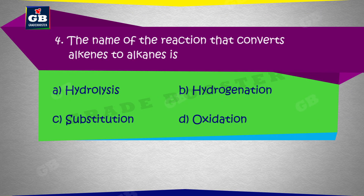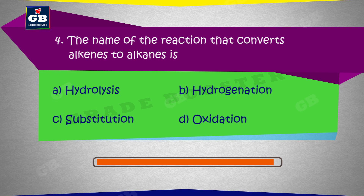The name of the reaction that converts alkenes to alkanes. Alkenes ko alkanes mein badalne waali reaction ka naam hai: a) Hydrolysis, b) Hydrogenation, c) Substitution, d) Oxidation.